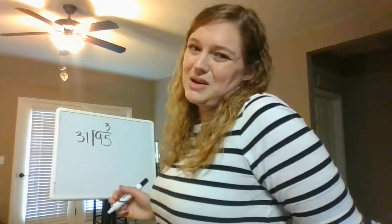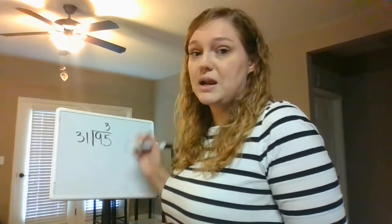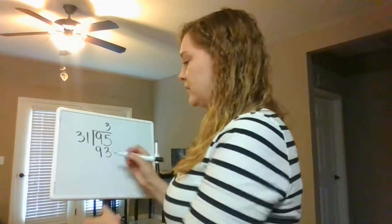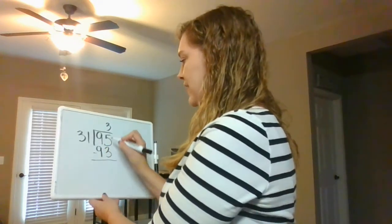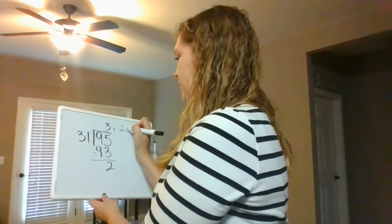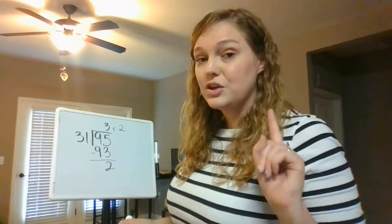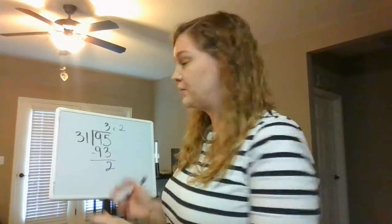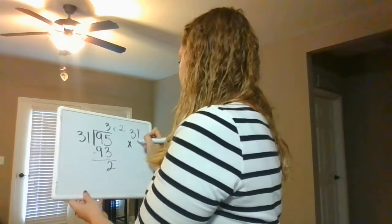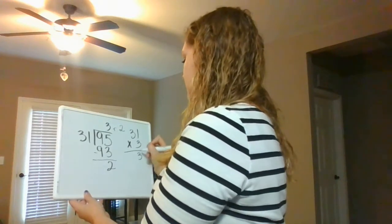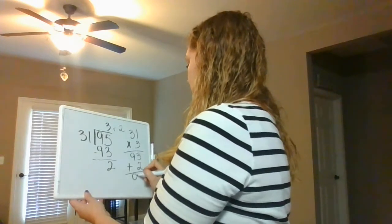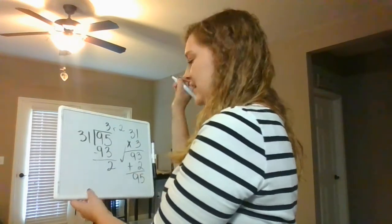I don't maybe know 3 times 31 off the top of my head, but I know 3 times 1 is 3 and 3 times 3 is 9. Then we subtract like normal: 95 minus 93 is 2. So I have 3 remainder 2. You'll probably want to check, so I'm going to go ahead and check it: 31 times 3 — 1 times 3 is 3, 3 times 3 is 9, plus 2 is 95. And I did it right!